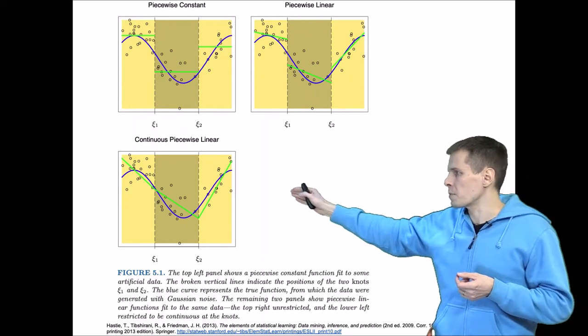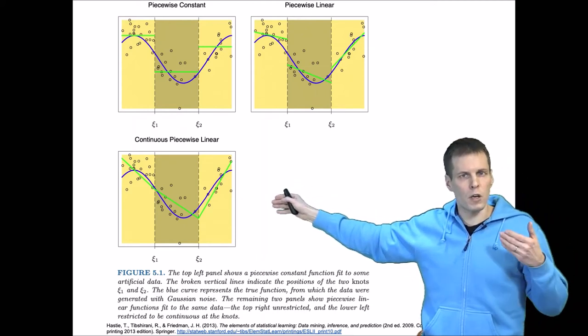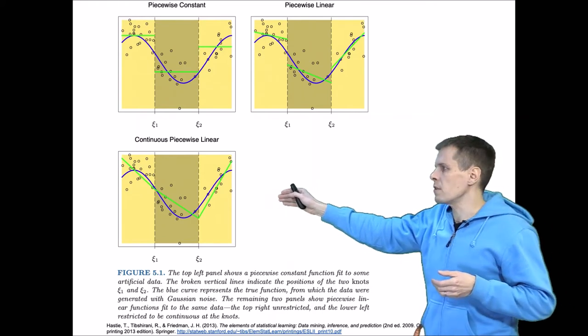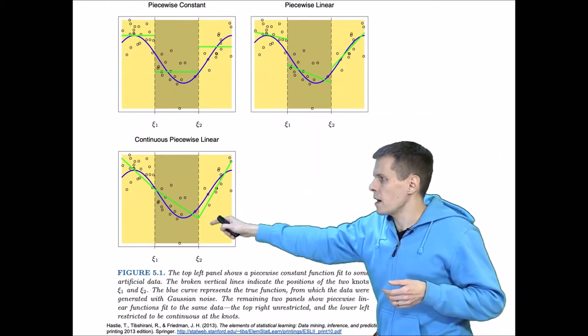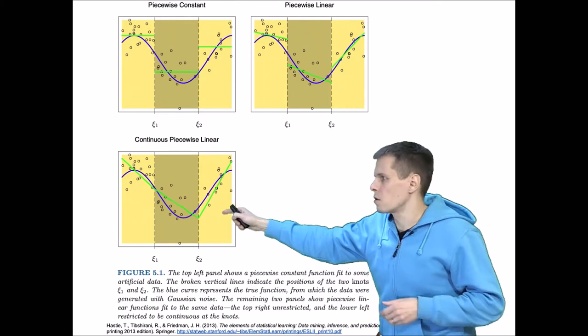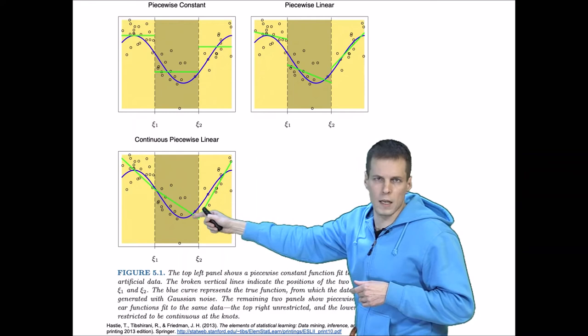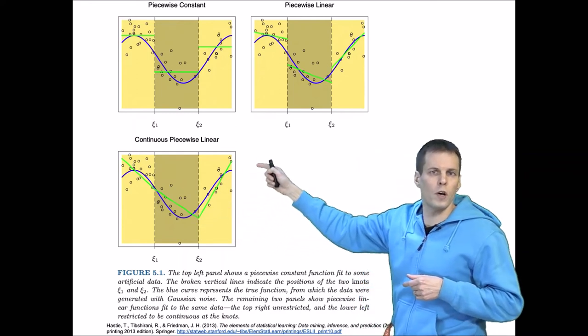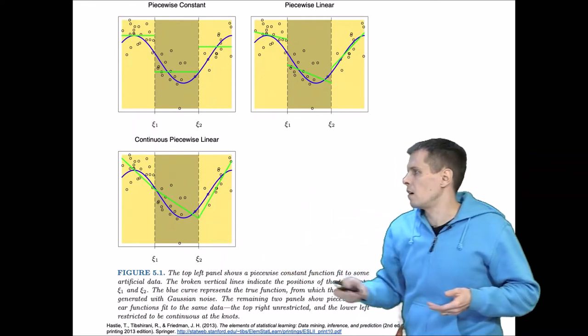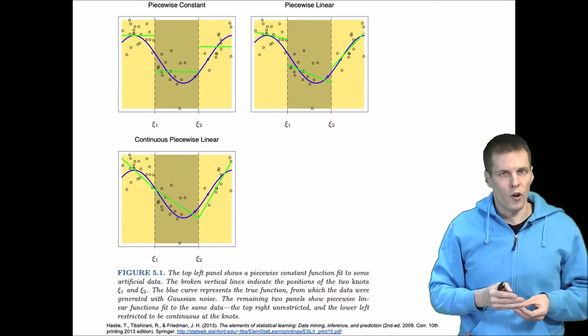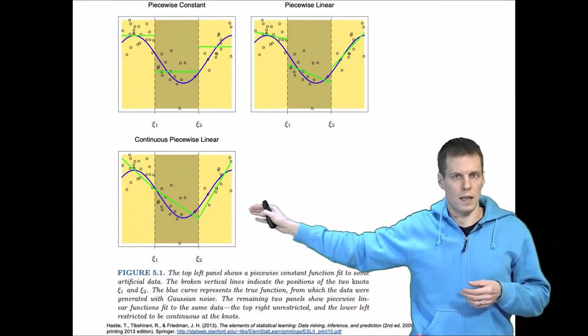Typically when we have a spline we want the spline to be continuous. So we restrict one of these lines to start where the other one ends. So for example here we have a negative slope, negative slope but not as negative, and then a positive slope, and that fits a curve that is non-linear. So this is the most commonly used scenario.